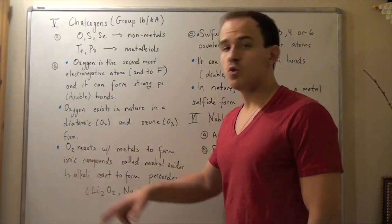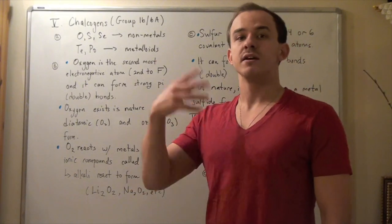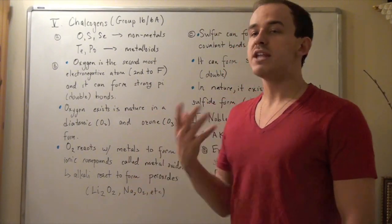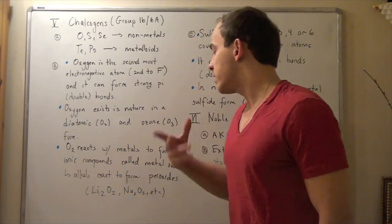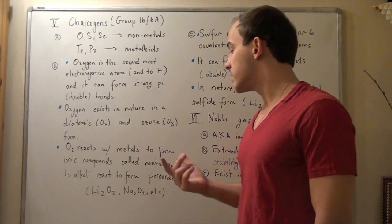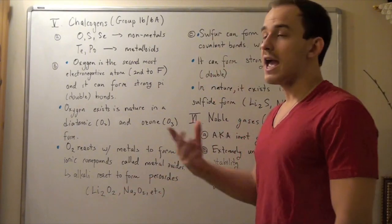O2, or oxygen, reacts with metals—alkali metals, earth metals, and transition metals—to form metal oxides. Whenever alkali metals react with oxygen, they form peroxides, for example Li2O2 or Na2O2.